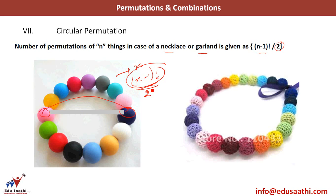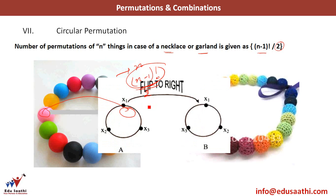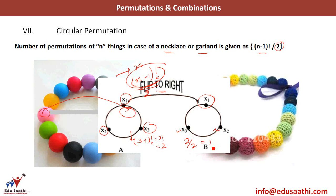When I flip to the right: I had x1, x2, and x3. After flipping, x1 remains but x2 and x3 change positions. So if I had 3 beads in a circular arrangement, that is 3 minus 1 factorial which is 2 factorial, or 2. But since it is a garland and it can be flipped, the answer is 2 factorial divided by 2, which is just 1 way. Remember: whenever you have a necklace or a garland, the answer is n minus 1 factorial divided by 2.